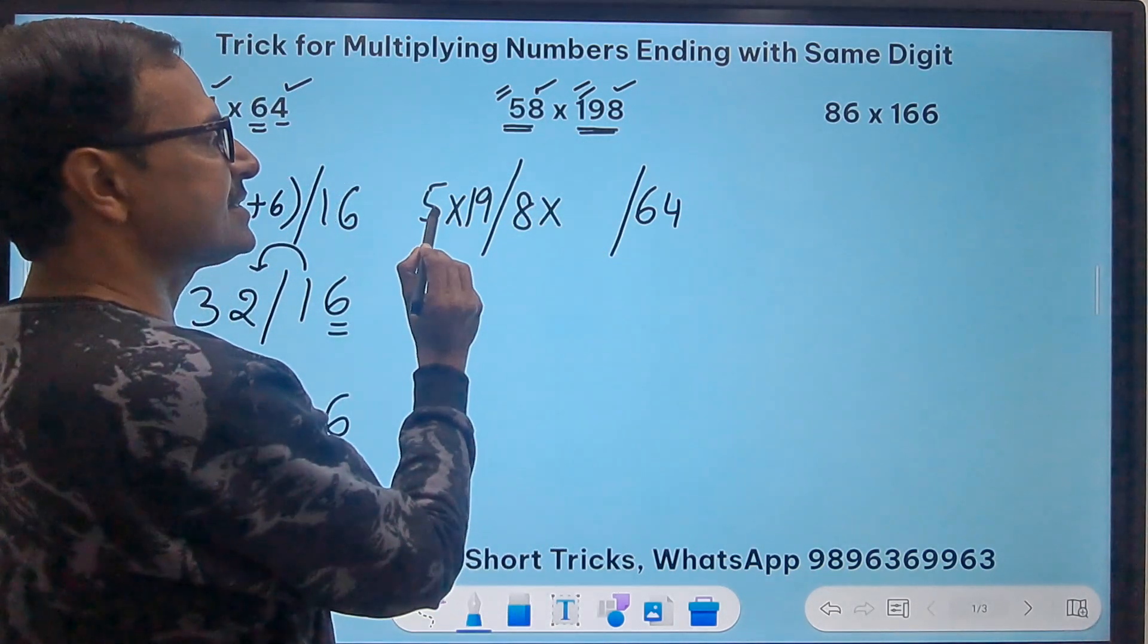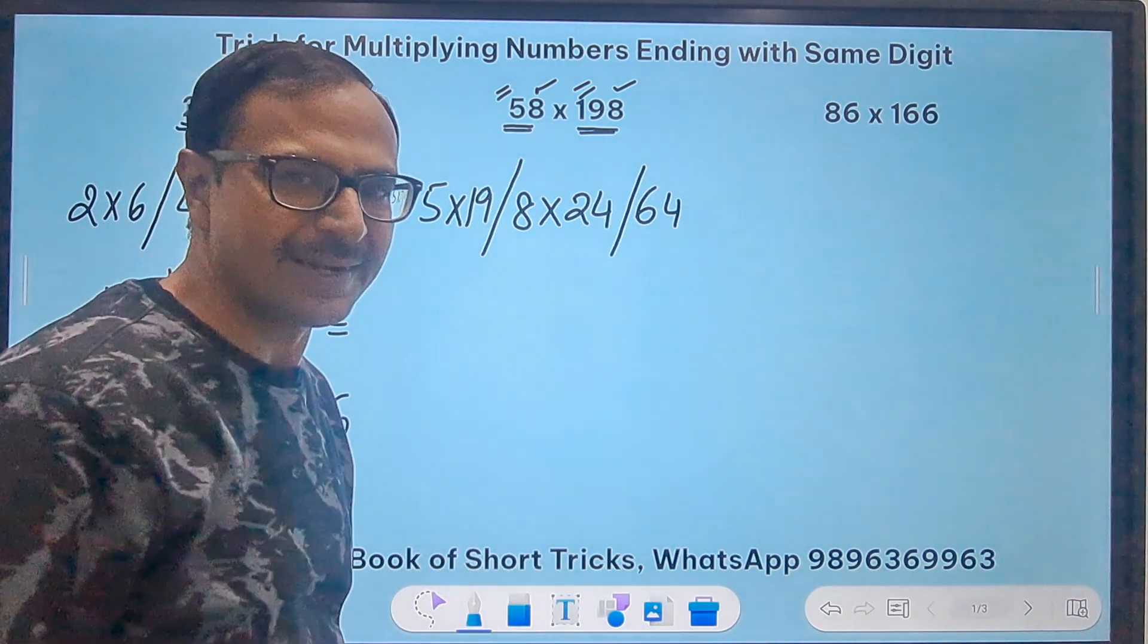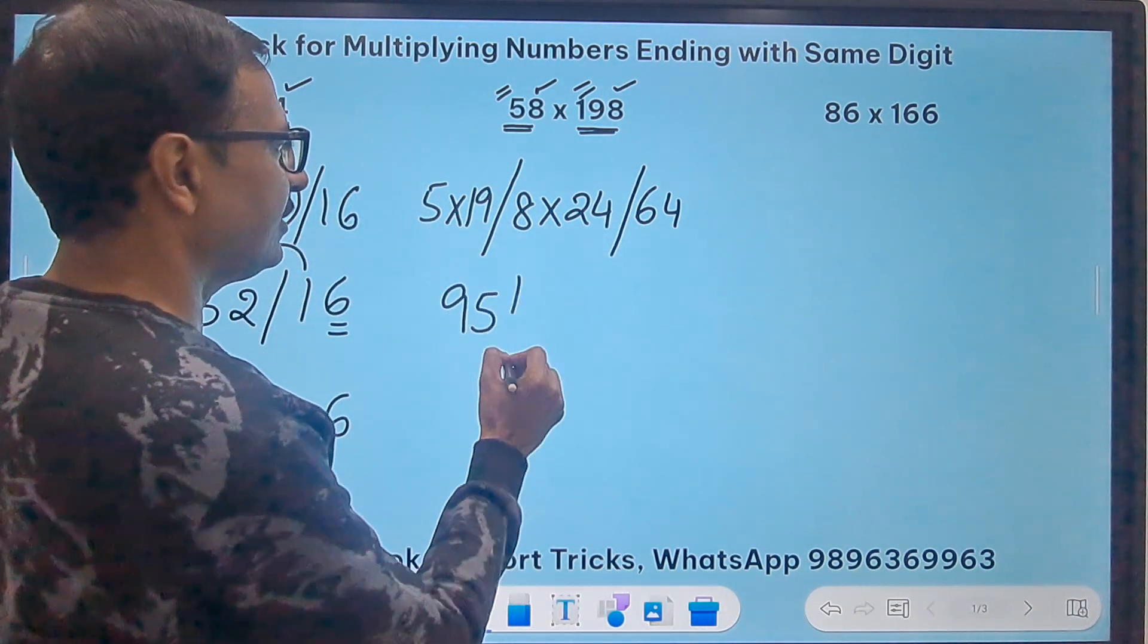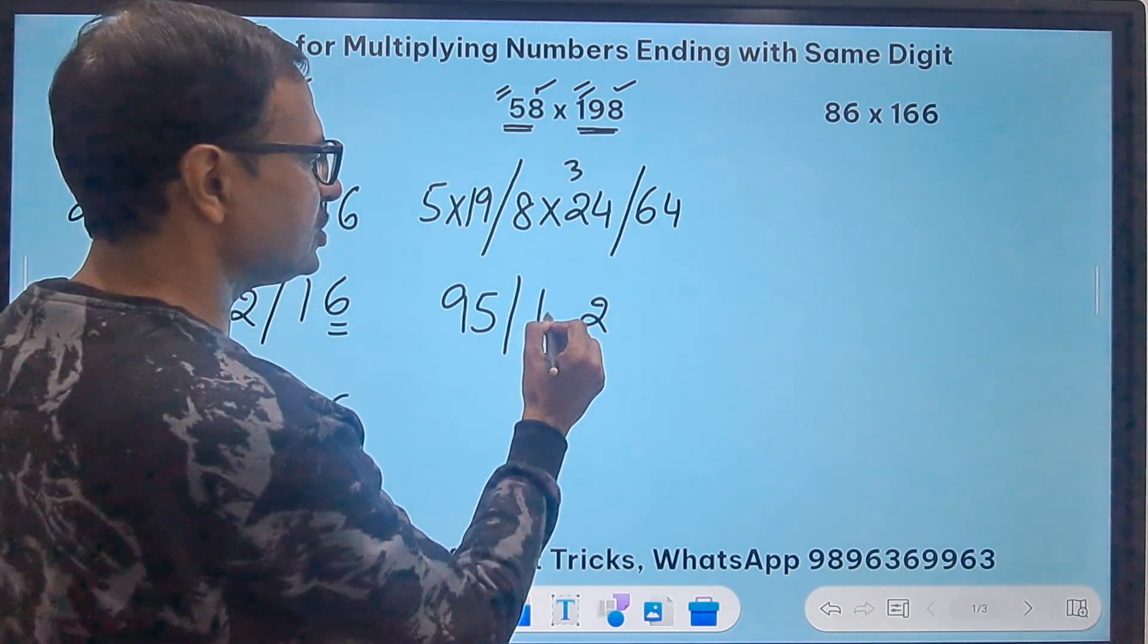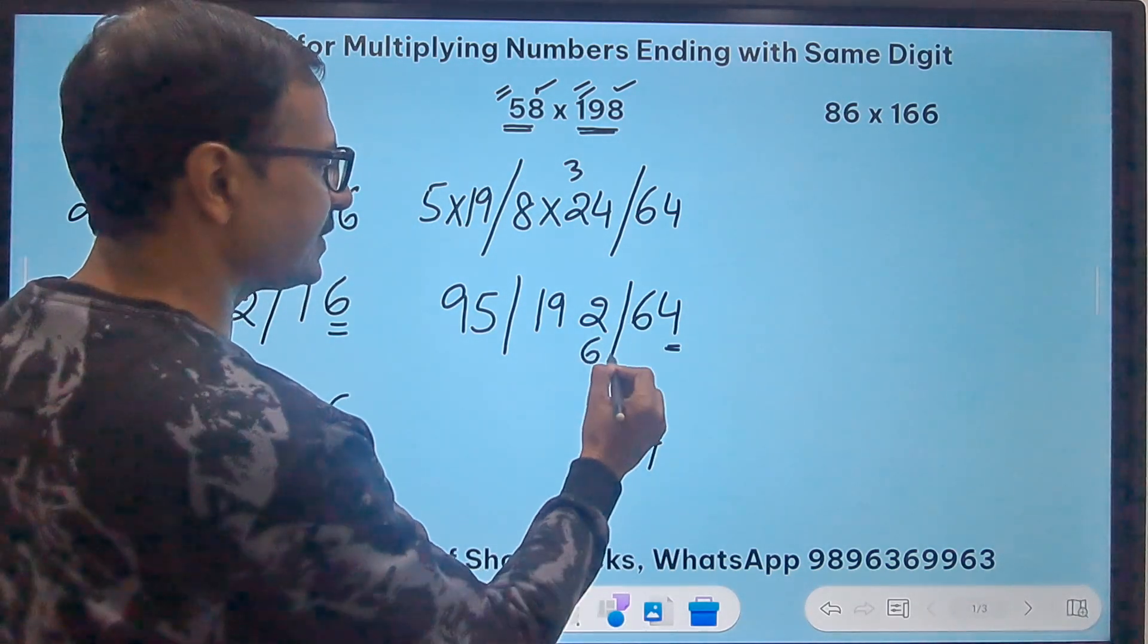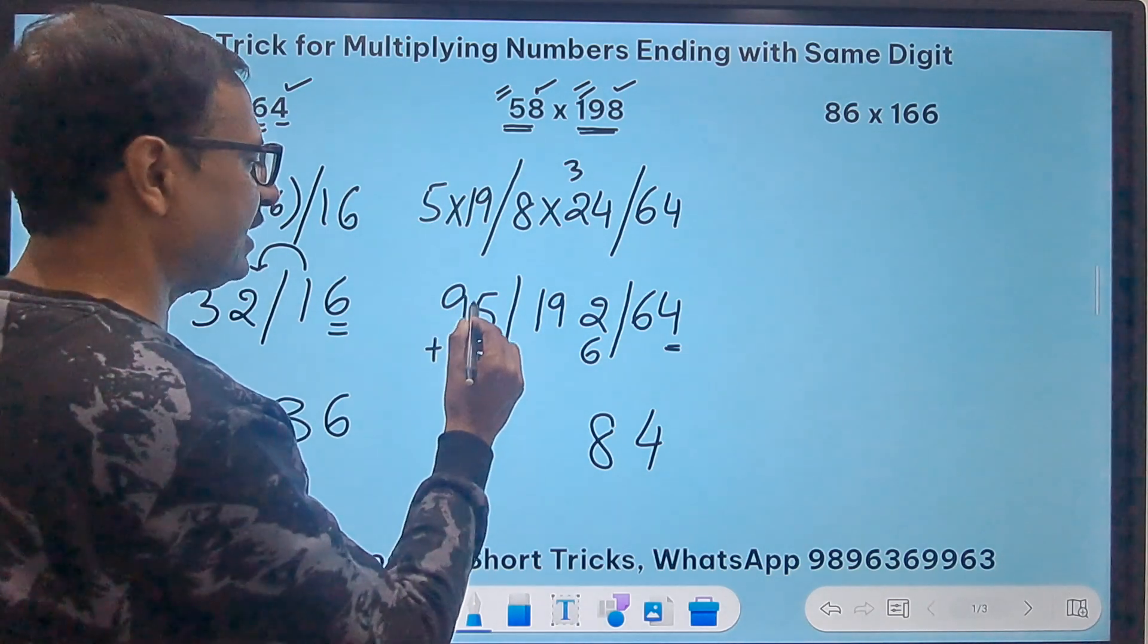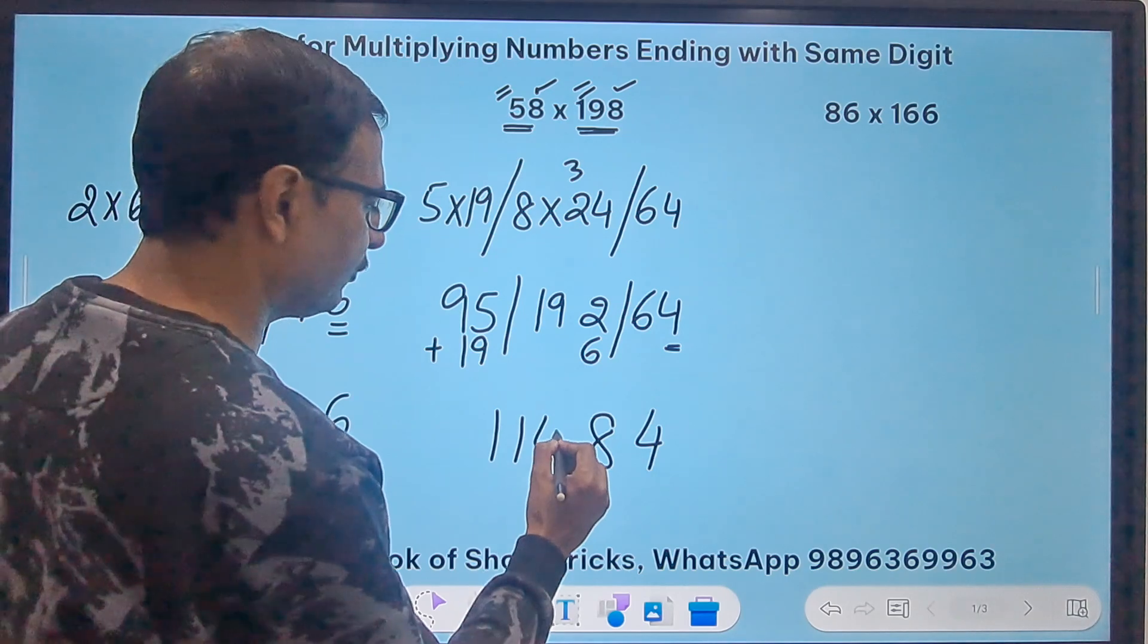5 times 19 is 95 and 8 times 24 is 192. So 192 here and 64 here. Now retain the unit digit 4 carry forward 6 here this becomes 198 so 8, 19 gets carried forward. So 95 plus 19 is 114, so 11484 is the product of 58 and 198.